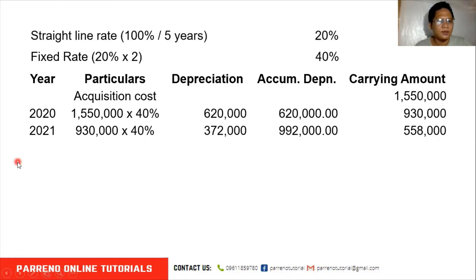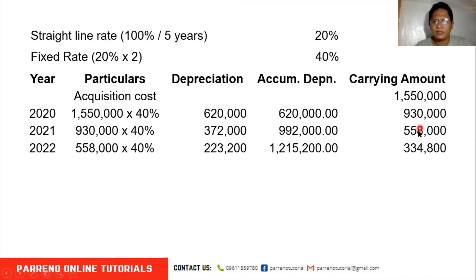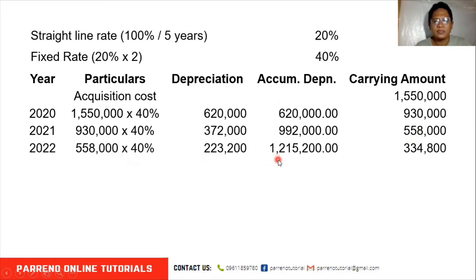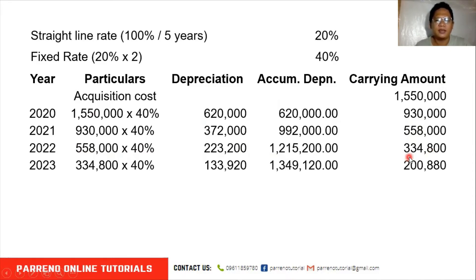In 2022, we take the carrying amount of $558,000 times 40%, giving a depreciation of $223,200. As expected with the accelerated method, this is lower than the previous year. Our accumulated depreciation is now $1,215,200, and our new carrying amount is $334,800. In 2023, likewise, the carrying amount times 40% gives depreciation of $133,920.